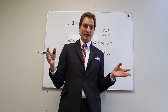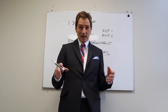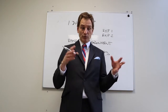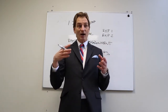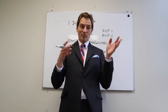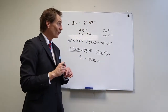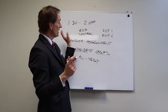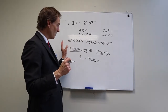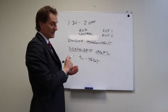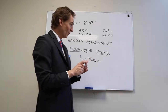Think about picking teams in elementary school — people don't choose randomly who's on their team. They pick friends or people they think will do well in the sport. We try to keep the idea of independent groups to ensure our experiments are valid.